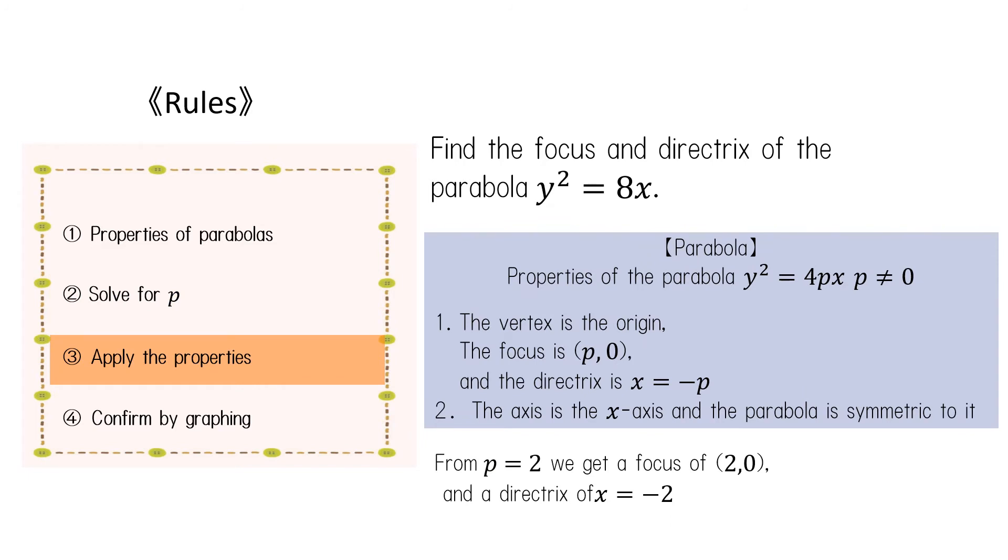Finally, let's apply the properties and calculate. Doing so, we find that the focal point is the point (2, 0), and the directrix is the line x equals negative 2.